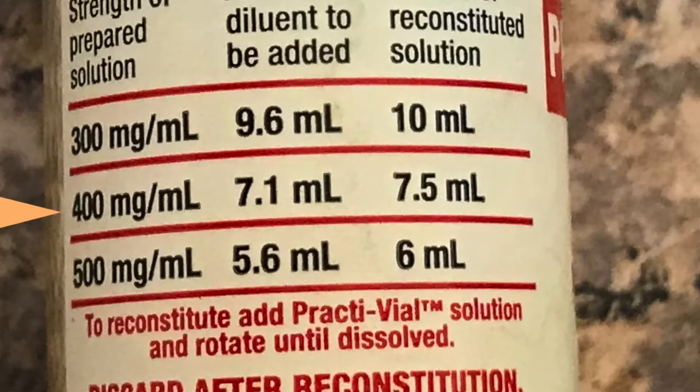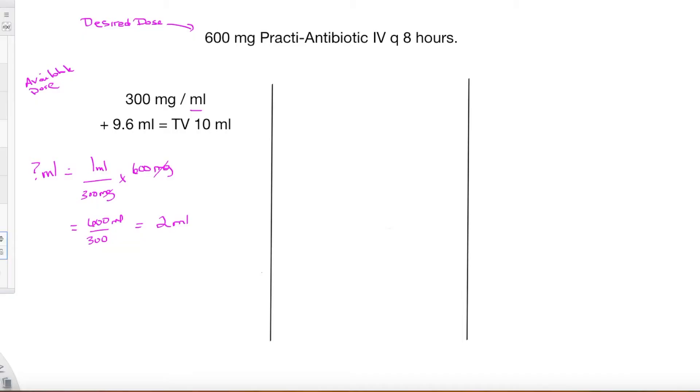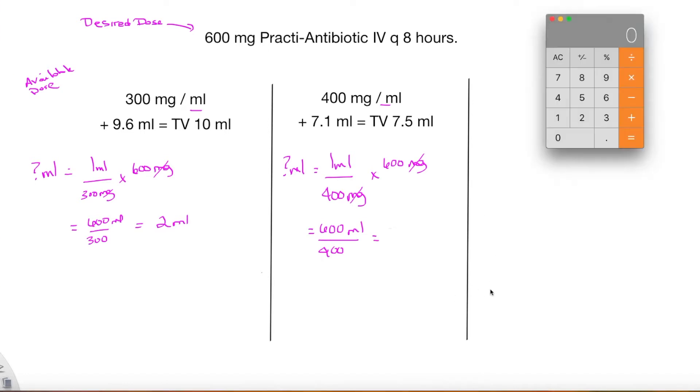Now I also have the option of doing a 400 milligrams per ml concentration or a 500 milligram per ml concentration. So let's look at those two next. With 400 milligram per ml concentration I would need 7.1 mls of diluent for a total volume of 7.5 mls. You'll notice as the total volume decreases the concentration increases. Using dimensional analysis at this concentration I would only need 1.5 mls of medication.